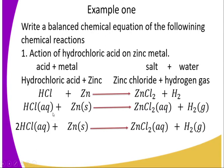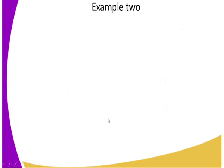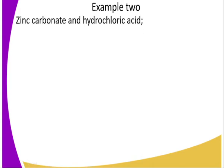Step three — state symbols: HCl is aqueous (aq), meaning it exists in ionic state; zinc is a solid metal (s); zinc chloride is aqueous (aq) as it is a soluble chloride; and hydrogen is a gas (g). Step four — balancing: HCl has one hydrogen atom on the reactant side, but H₂ has two on the product side, so we add a coefficient of 2 to HCl to balance the equation.